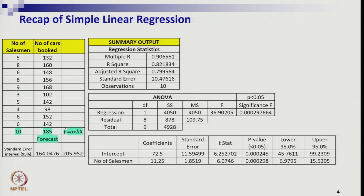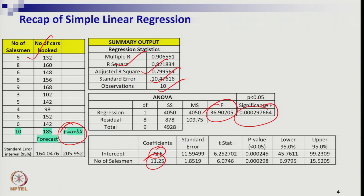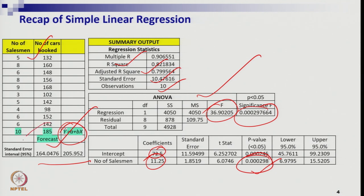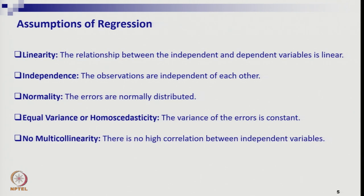Now let us enter into multiple regression. Also remember the examples we illustrated for simple linear regression — we fitted the line with this intercept and slope, found the R-square value, adjusted R-square, standard error, observations, overall F-test value, and the corresponding p-value less than 0.05. The overall regression was significant. Since it is one single variable, individual level also shows p less than 0.05 for the corresponding t-test. Now let us enter into multiple regression.